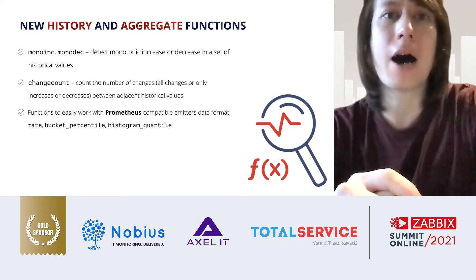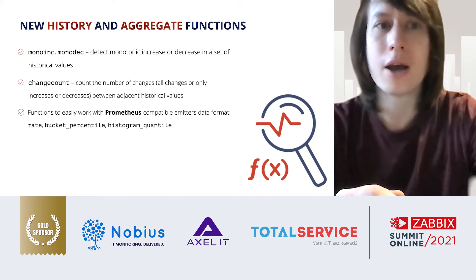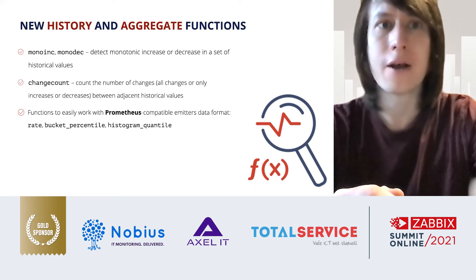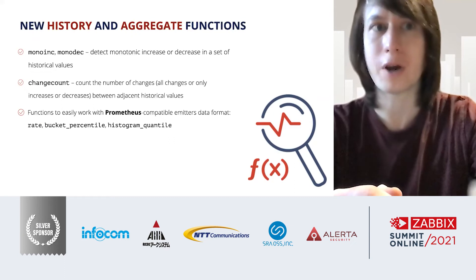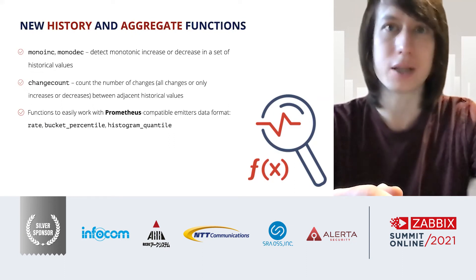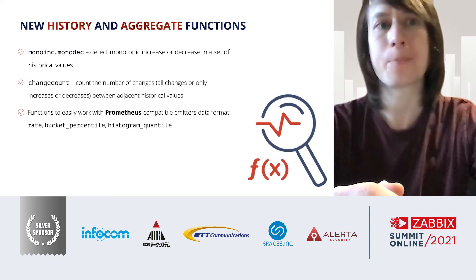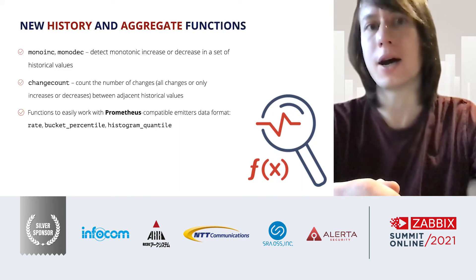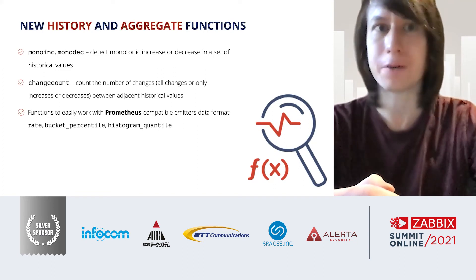New history and aggregate functions allow you to concisely define expressions and thresholds without writing long comparisons of last values. We introduced mono-inc and mono-dec, which allow you to detect a monotonic increase or decrease in a set of historical values — useful for detecting anomalies like depleting disk space or a growing message broker queue, so you can detect them as soon as possible. It's also possible to count changes between adjacent values, detecting either all changes or only increases and decreases — a very useful use case is counting how many times a server has been rebooted based on system uptime values.